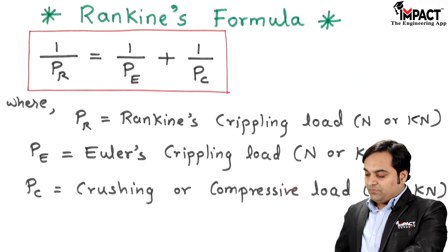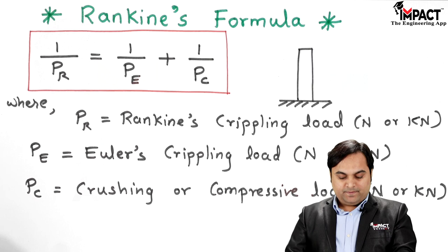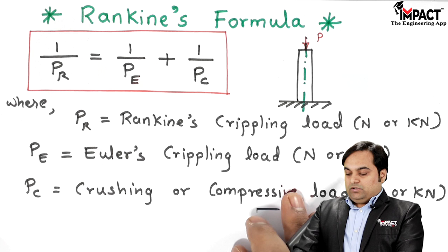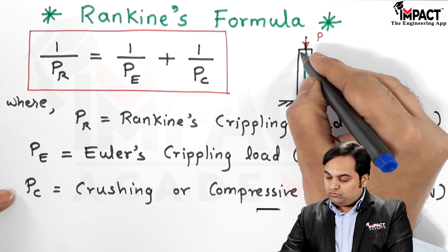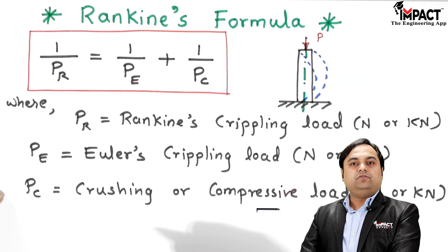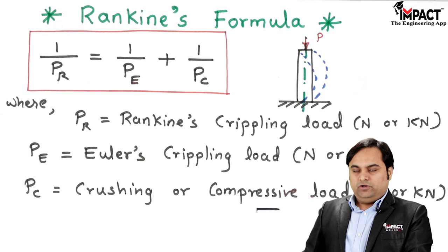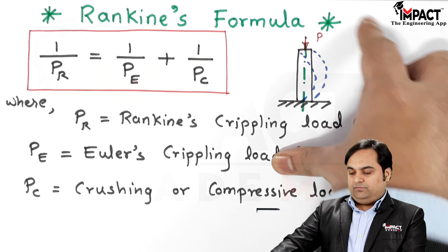Consider a column fixed at one end and free at the other end, subjected to an axial load P. When we consider Euler's crippling load, this column will buckle or bend under the applied load — this bending pattern is called buckling. However, the column is also subjected to direct compression, and that crushing stress becomes more significant when the column length decreases. A long column fails due to buckling whereas a short column fails due to direct compression.